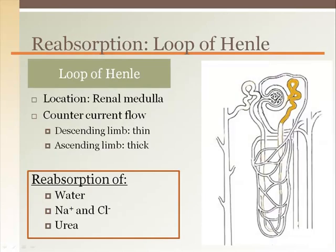Nephrons that have a glomerulus and proximal convoluted tubule close to the medulla are called juxtamedullary nephrons. These nephrons have a loop of Henle entirely in the medullary pyramids and surrounded by a capillary network called the vasa recta. The U-turn arrangement of the loop creates a counter-current flow which concentrates the solutes in the medulla, increasing water reabsorption. The descending limb is made of simple squamous epithelial tissue for free diffusion of solutes, while the ascending limb is made of simple cuboidal epithelial tissue for active transport of solutes, concentrating the area between the two.